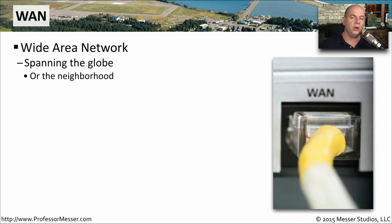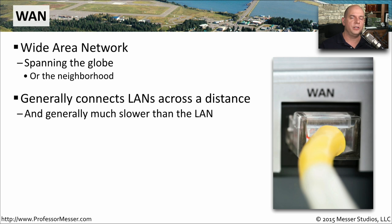Communication over a longer distance might be considered a WAN, or Wide Area Network. This is a connection that is certainly larger than a local area network. You're often going to another city, communicating across the country, or across the world. Because of this extended distance, the speeds associated with Wide Area Network technology are generally slower than what you'll see for an Ethernet or an 802.11 network.